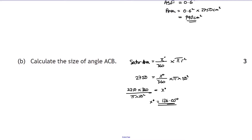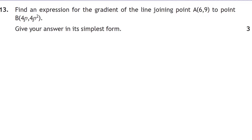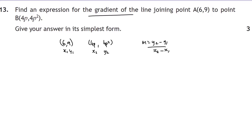Question thirteen: find an expression for the gradient given two points (6, 9) and (4p, 4p²). Even with p's, it's the same gradient formula: (y₂ − y₁)/(x₂ − x₁). Substituting in: (4p² − 9)/(4p − 6). Now we need to simplify this algebraic fraction.